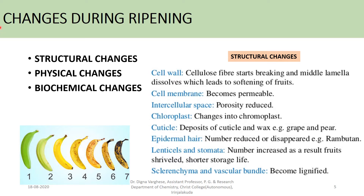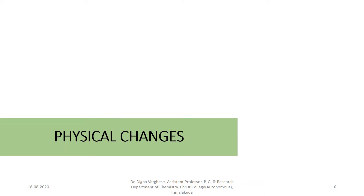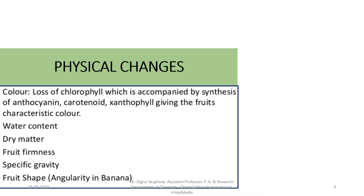Lenticels and stomata: the number of pores increases. As a result, fruits shrivel — they develop wrinkles and have a shorter storage life. Sclerenchyma and vascular bundles become lignified. Physical changes include: color — loss of chlorophyll accompanied by synthesis of anthocyanin, carotenoid, and xanthophyll — giving the fruit its characteristic color.